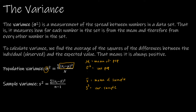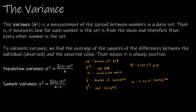When it says x-sub-i, that's just indicating each data value. When dealing with the population we use capital N, which is the size of the population, whereas lowercase n is the size of the sample. They're complicated-looking equations for something that's not super complicated. We're going to do one example by hand, but mostly we'll let Excel do the work for us.